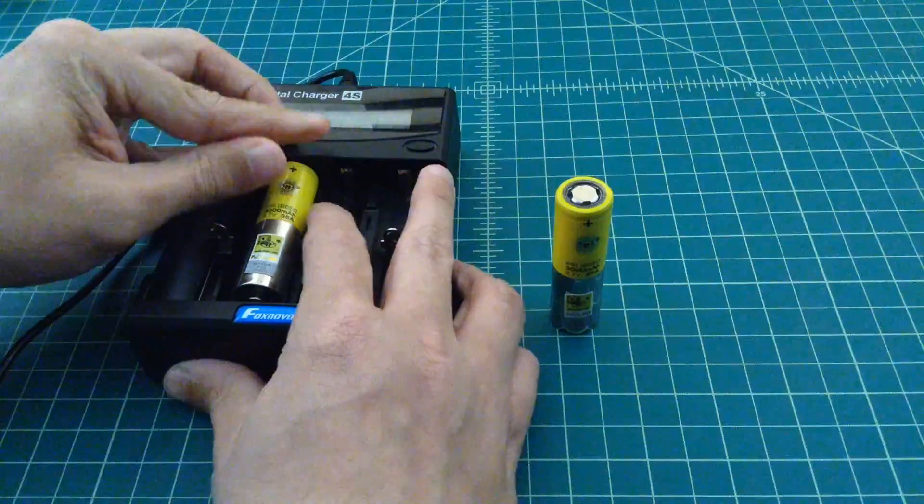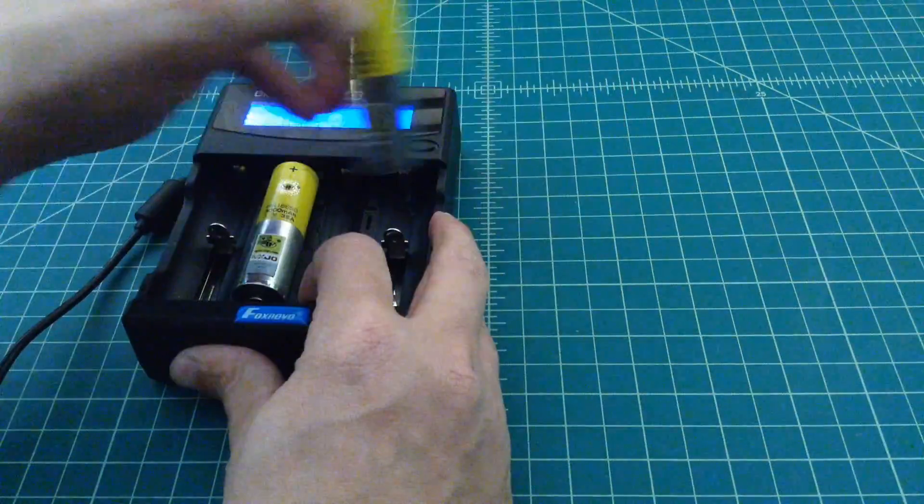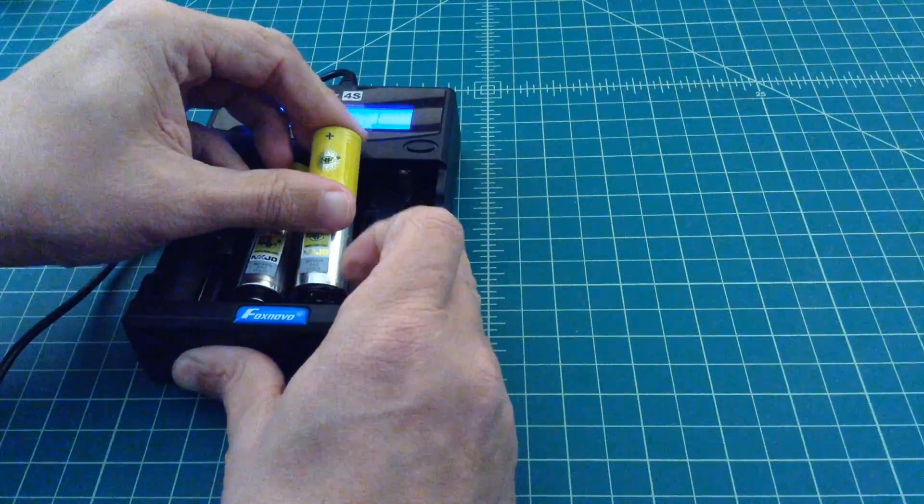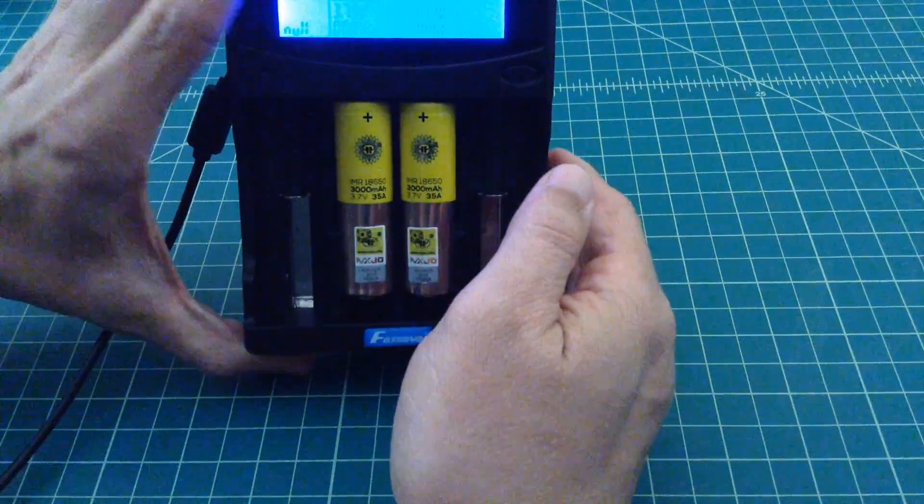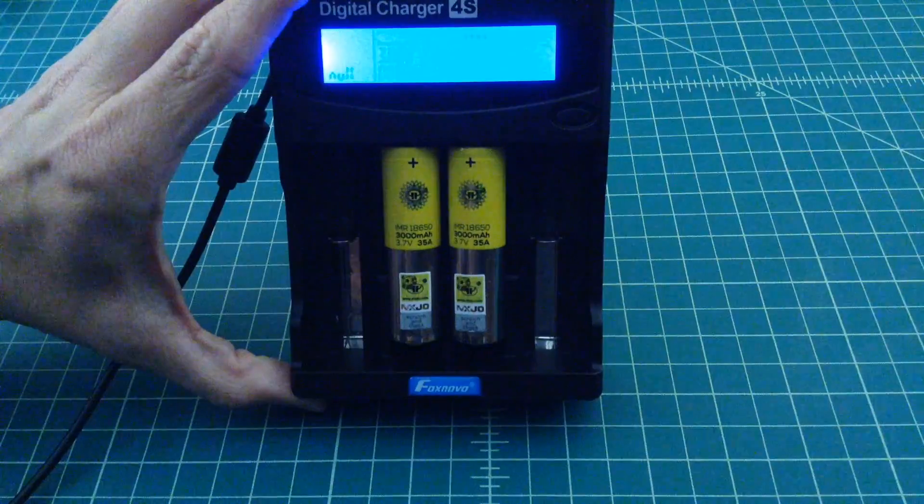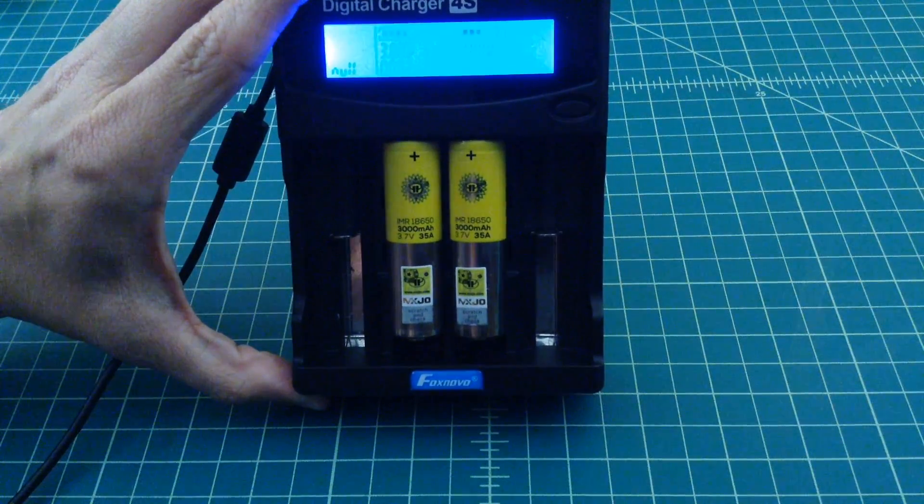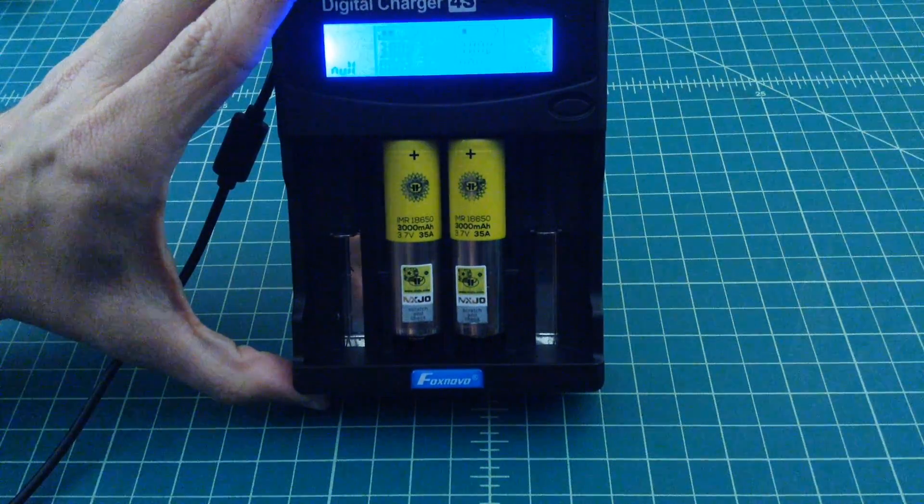So let's go ahead and let's put these in here. Now what we're going to do is we're going to charge these all the way up and then we're going to discharge them at one amp per hour. So at 3000, this should take about six hours to top them off, discharge, and fully recharge them.